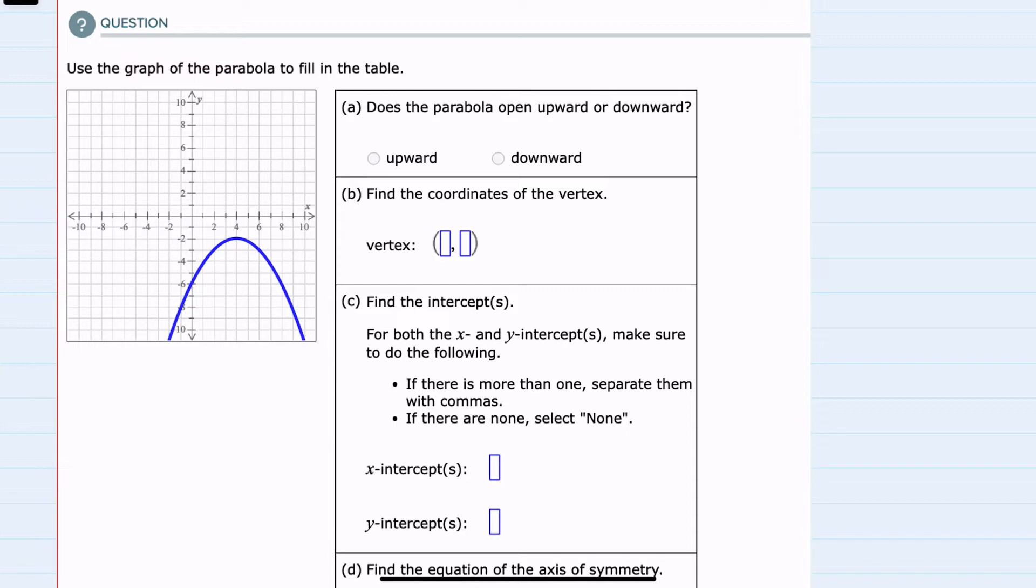If we think of the parabola as a bowl, we can see that this bowl would not be able to hold anything. This bowl is upside down, so it is opening downward.